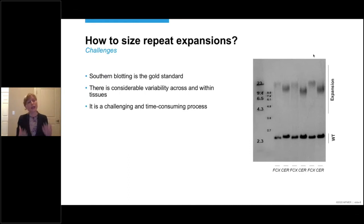And in this case, three individuals are displayed, three unique individuals, two regions each, the frontal cortex and the cerebellum. And as you can see, the expansion size appears to be longer in the frontal cortex than in the cerebellum. And that stresses the fact that there is considerable variability across tissues and within tissues. I should also mention that southern blotting can be challenging and very time-consuming. It generally takes at least a week to do a single southern blot.